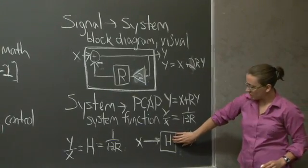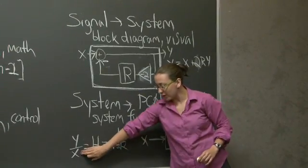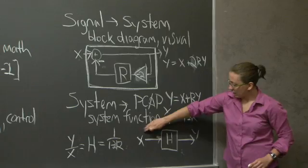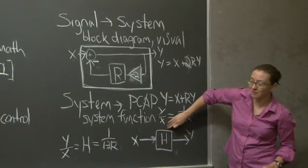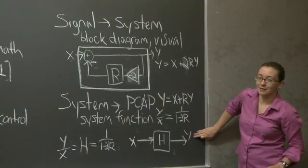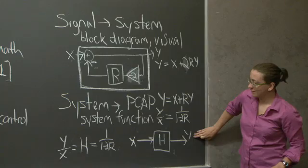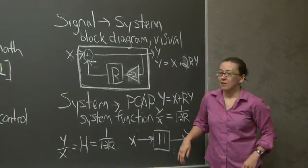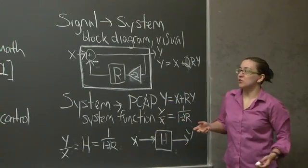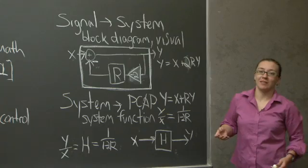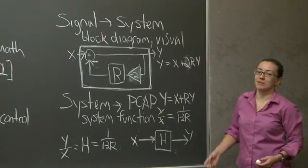In this case, with the 2, y over x is going to be 1 over 1 minus 2r. Note that if h is equal to the expression y over x and I multiply h by x, I get out y.